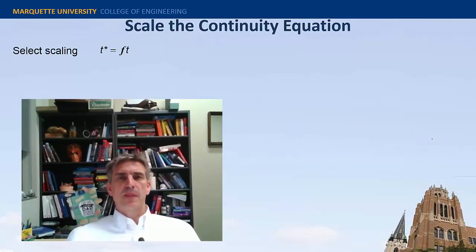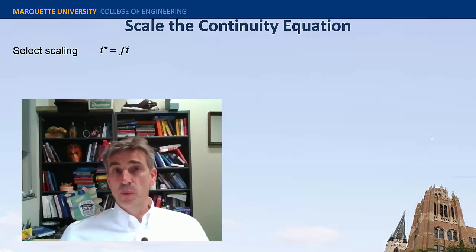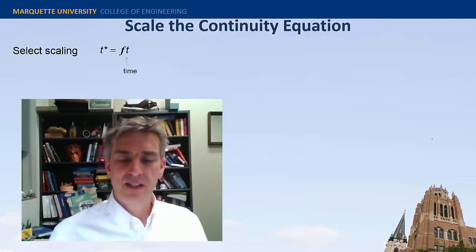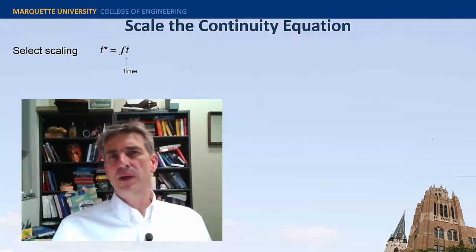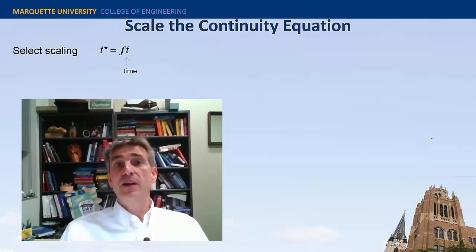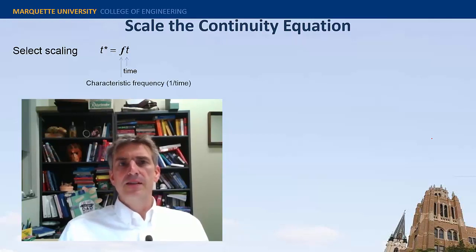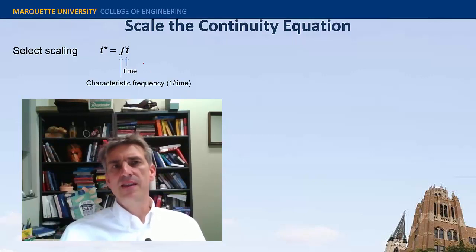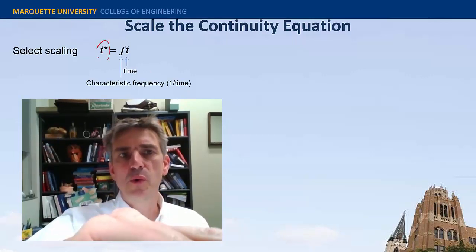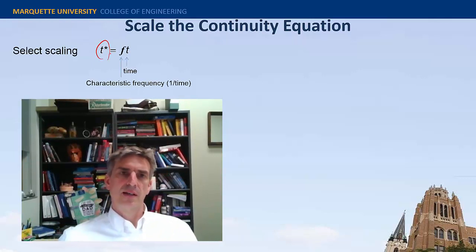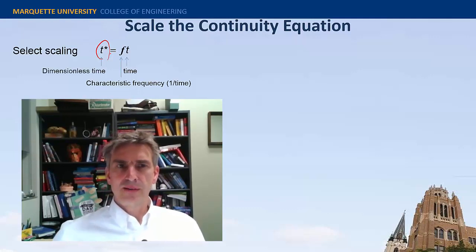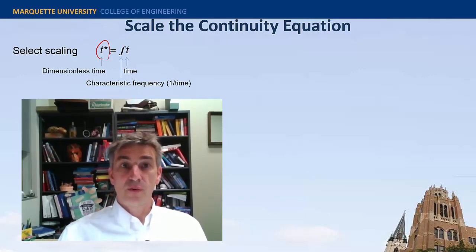Let's start with the first parameter. The first independent variable we want to scale will be time. Time is the regular old time, and we're going to multiply this by some characteristic frequency of the flow. Looking at the units, that's one over time times time, so this dimensionless time — denoted with the superscript asterisk — is our dimensionless time. We can carry on like this for a variety of parameters.